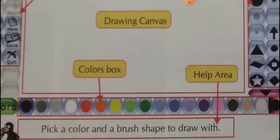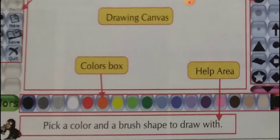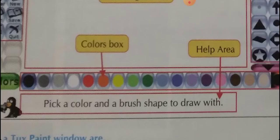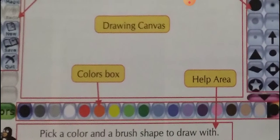The third component is Color Box. You can see many colors here — lots of colors. By clicking on any color you can select it from the color box. Below the color box you can see the Help Area. It will help you with your painting work by giving you information and tips regarding your work. That's why its name is help area — it will help you.